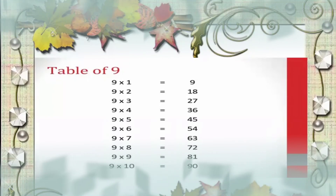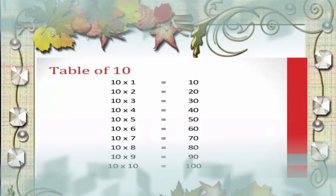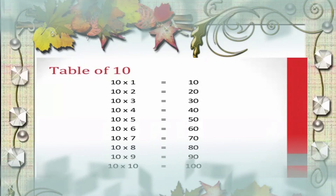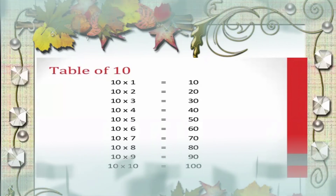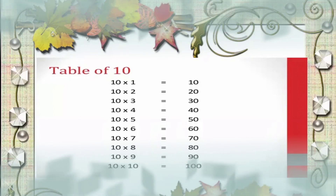Now the table of 10. 10 1s are 10, 10 2s are 20, 10 3s are 30, 10 4s are 40, 10 5s are 50, 10 6s are 60, 10 7s are 70, 10 8s are 80, 10 9s are 90, 10 10s are 100.